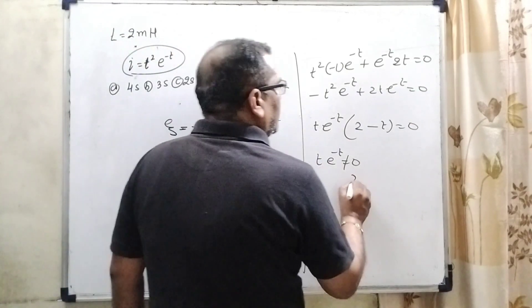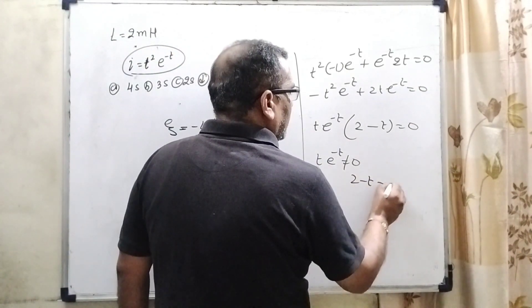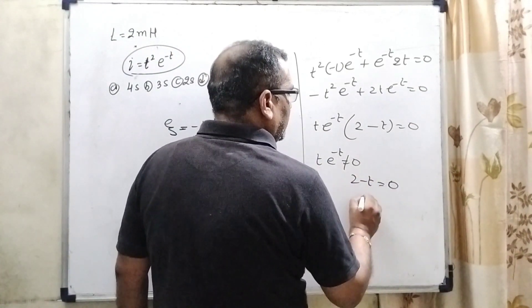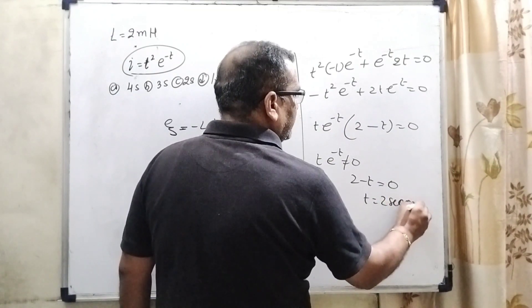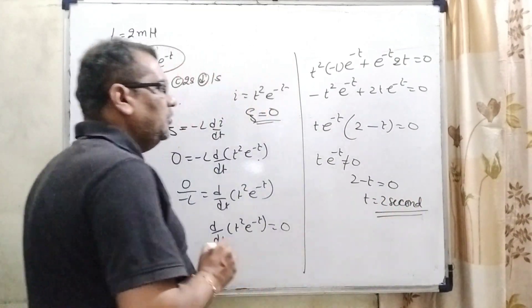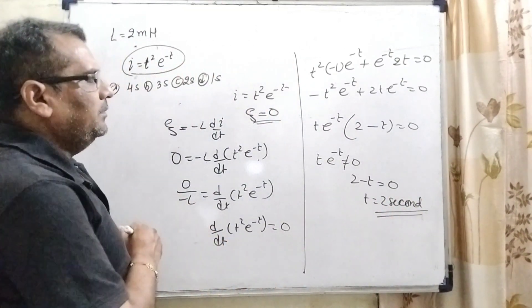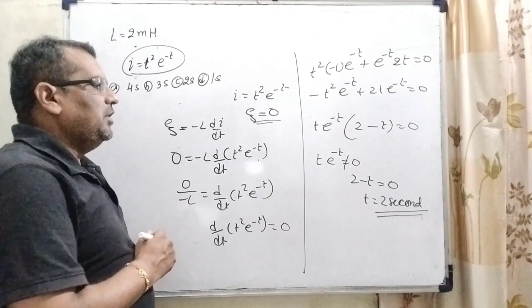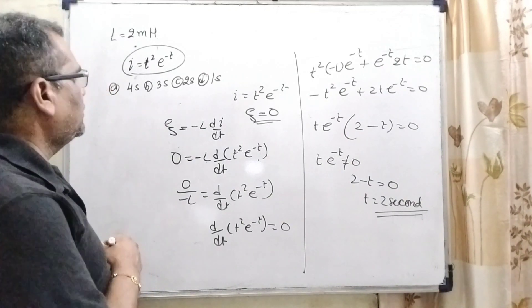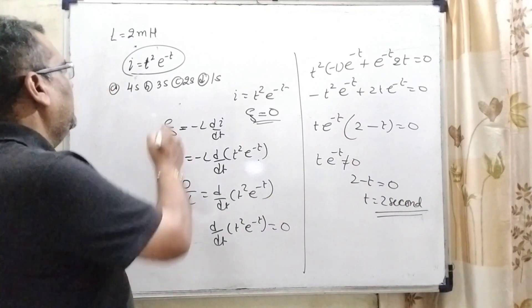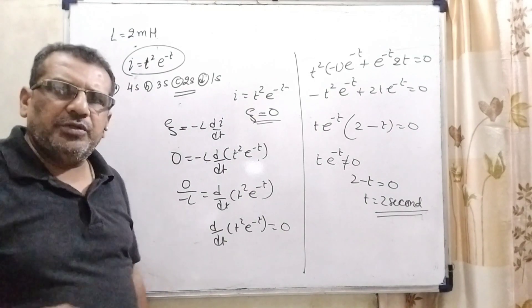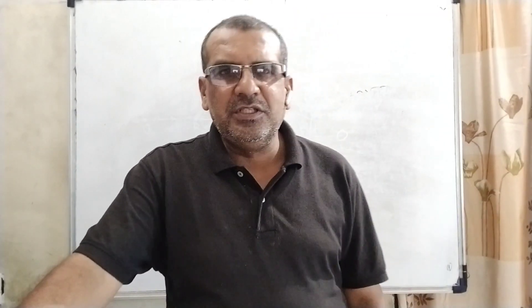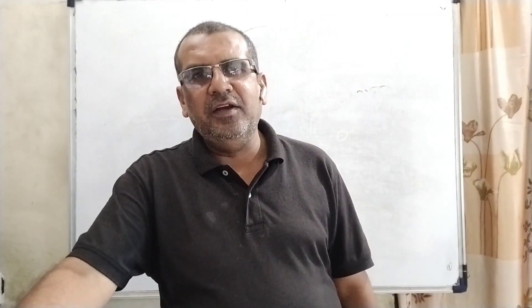Rearranging: minus t squared e raised to power minus t plus 2t e raised to power minus t equals zero. Taking e raised to power minus t and t common, we get t(2 minus t) equals zero. Therefore 2 minus t equals zero, giving t equals 2 seconds. So where the induced EMF equals zero, the time is 2 seconds — Option C is correct. I hope you understood this question.